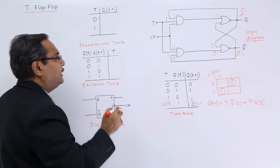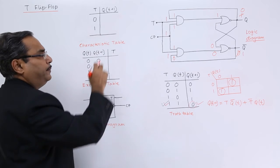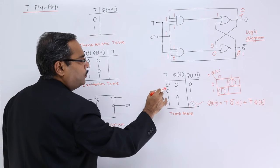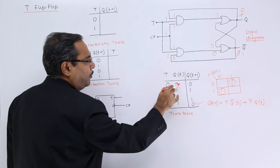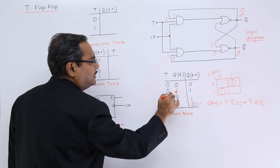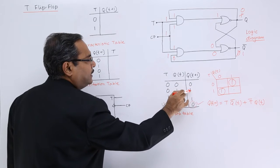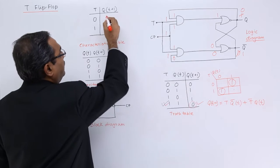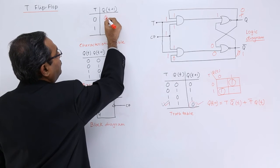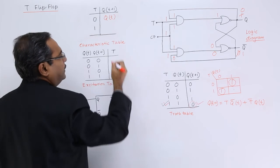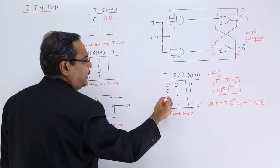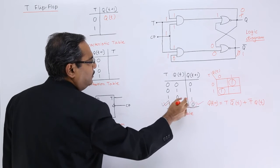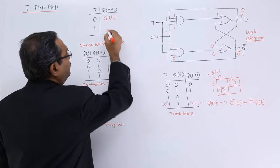Now let us look at the characteristic table of T flip-flop. If we provide T=0, then the output is getting no change — the previous output is the current output, so we write this as Qt. When the input is 1, then we get the complement of the previous output.